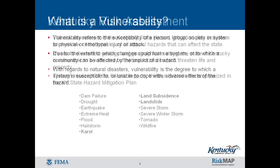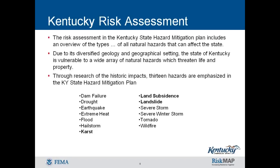The risk assessment in the Kentucky State Enhanced Hazard Mitigation Plan includes an overview of the types of all natural hazards that can affect the state. The state of Kentucky is vulnerable to a wide array of natural hazards which threaten life and property. Through research of the historic impacts, 13 hazards are identified in the Kentucky State Hazard Mitigation Plan. The focus of today's lesson will be karst topography, mine subsidence, and landslide. Additional modules are available to discuss the other hazards listed.